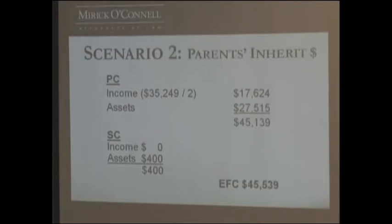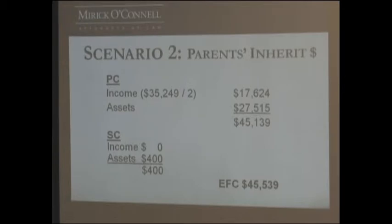In the second scenario, the parents inherited the full $400,000. You have the same income information, again split based on two children in the family. The assets are now set at $27,515 out of that $400,000, assumed to be available that particular year to pay for college. Adding the parent and student contributions, you get an EFC of $45,538.